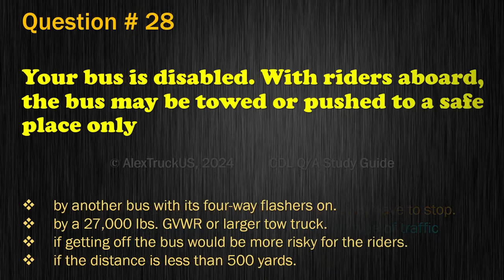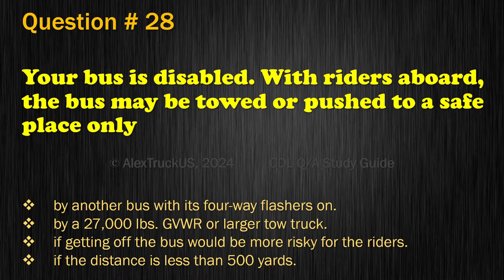Question 28. Your bus is disabled with riders aboard. The bus may be towed or pushed to a safe place only: By another bus with its four-way flashers on; By a 27,000 pounds GVWR or larger tow truck; If getting off the bus would be more risky for the riders; or If the distance is less than 500 yards. The correct answer is: If getting off the bus would be more risky for the riders.